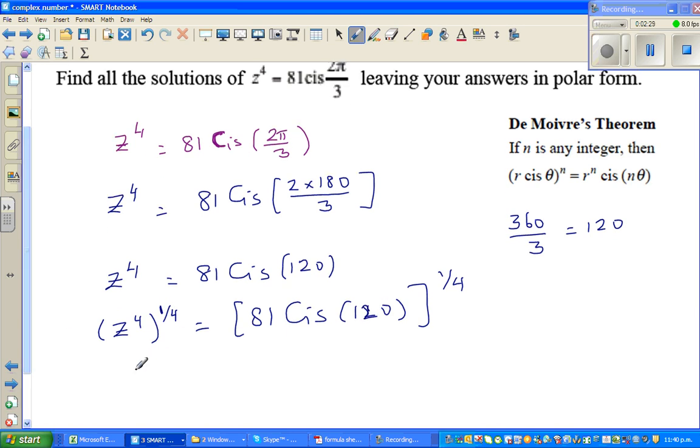So this is z1. Using De Moivre's rule, this will become 81 to the power of 1/4 or the 4th root of 81.